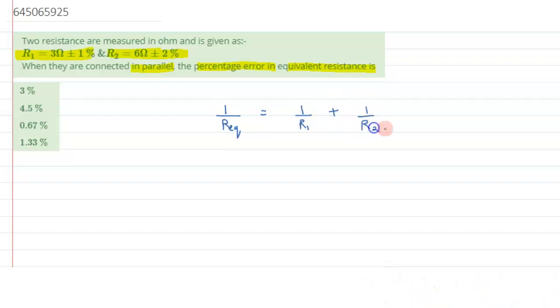Plus 1 by R2. There are two resistances of R1 and R2 so we have connected them in parallel. Therefore this can be further resolved as R_eq can be written as R1 into R2 divided by R1 plus R2. This is the formula which we are going to use to calculate the percentage error.